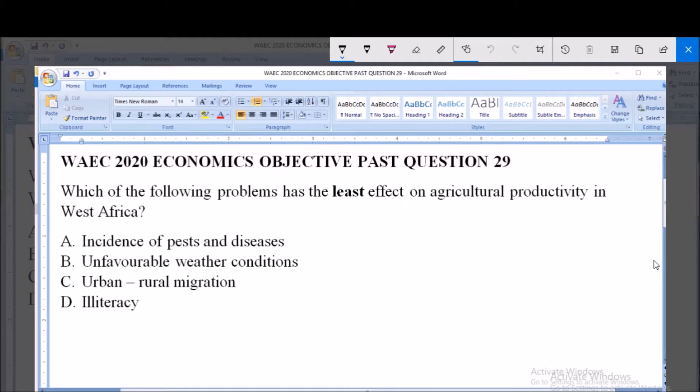A. Incidents of pests and diseases. B. Unfavorable weather conditions. C. Urban Rural Migration. D. Illiteracy.